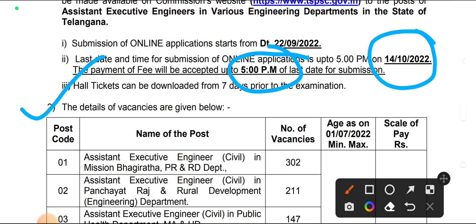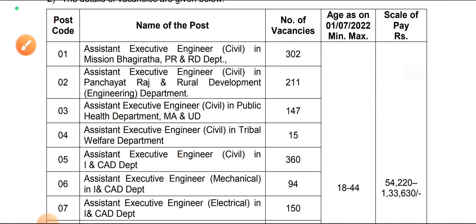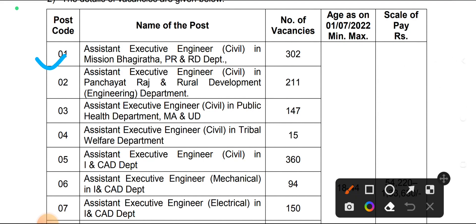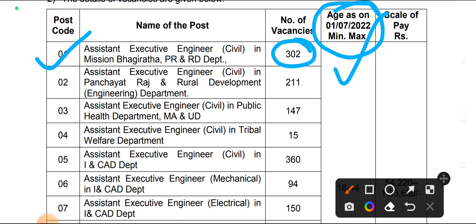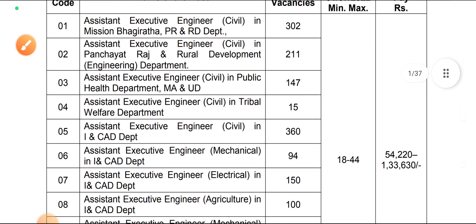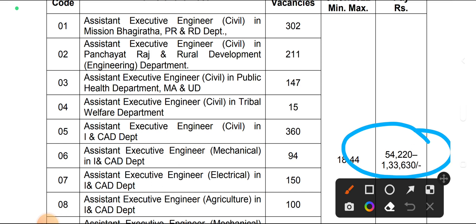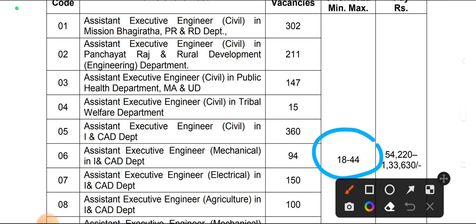Here the detail vacancy is given. First, assistant executive engineer in the civil department under Mission Bhagirata project — 302 vacancies. Very good vacancies. Your age will be calculated as per 1-7-2022. The PA scale is also very good: 54,220 to 1,33,630. The minimum and maximum age is 18 to 44 years.